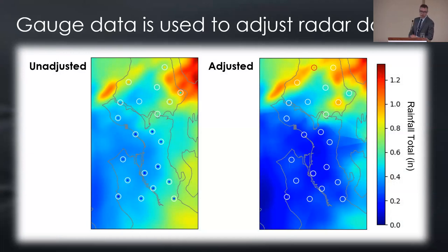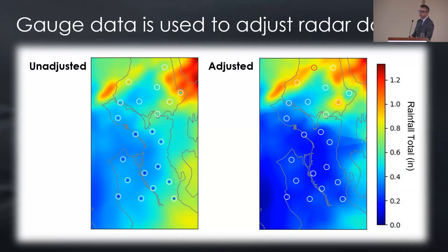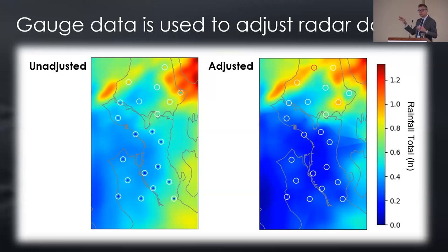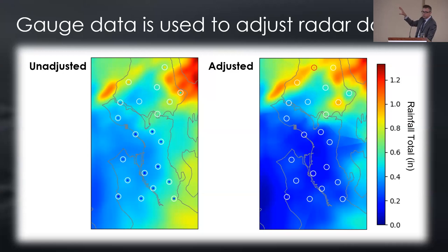Here we can see the city of Seattle and the locations of rainfall gauges. Seattle provided gauge data for this analysis. On the left we have unadjusted radar rainfall — a distribution based on reflectivity calculated with the Marshall-Palmer equation — along with actual recorded estimates at each rain gauge. We determine the difference between what the Marshall-Palmer equation predicted and what was actually recorded at each gauge, compute an error distribution across the entire city, and use that to generate gauge-adjusted radar rainfall corrected for the spatial errors.